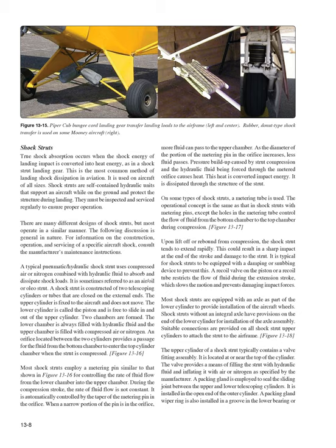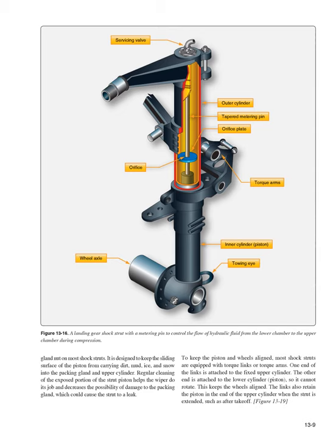The upper cylinder of a shock strut typically contains a valve fitting assembly located at or near the top of the cylinder. The valve provides a means of filling the strut with hydraulic fluid and inflating it with air or nitrogen as specified by the manufacturer. A packing gland is employed to seal the sliding joint between the upper and lower telescoping cylinders, installed in the open end of the outer cylinder. A packing gland wiper ring is also installed to keep the sliding surface of the piston from carrying dirt, mud, ice, and snow into the packing gland and upper cylinder.